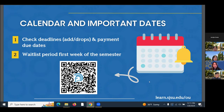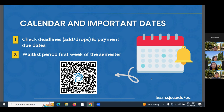If there's one page to bookmark, it's the calendar, which will be updated around the week of January 22nd. It contains all important dates and deadlines, including the first and last day to add or drop classes and payment deadlines — because not paying on time is a common cause of drops. The first day of instruction and registration is Wednesday, January 24th. The waitlist period is during the first week of the semester, when you can add yourself to waitlisted classes if seats become available.